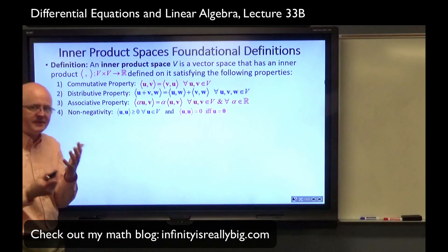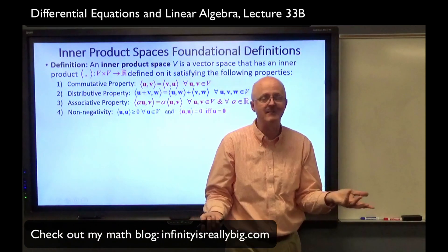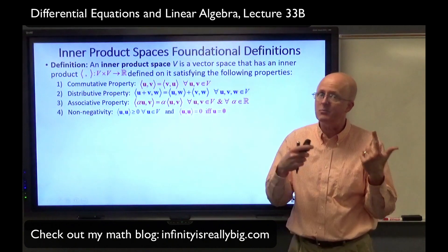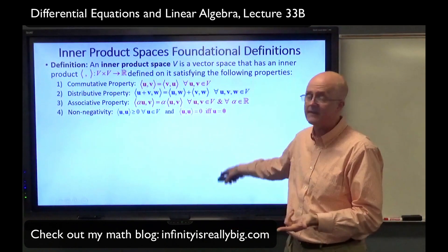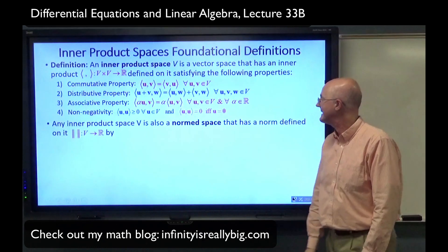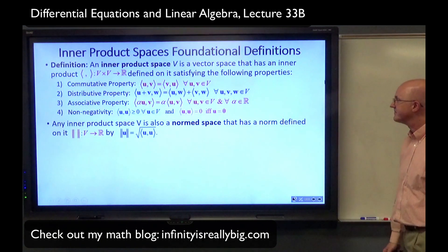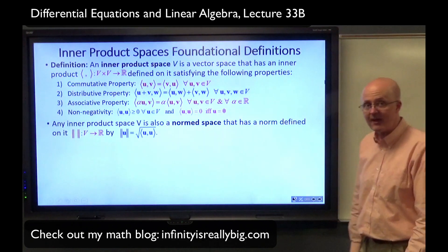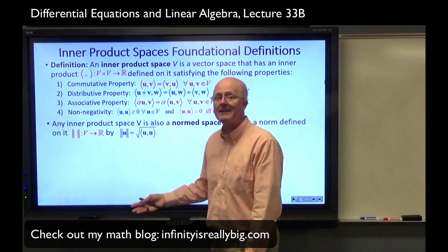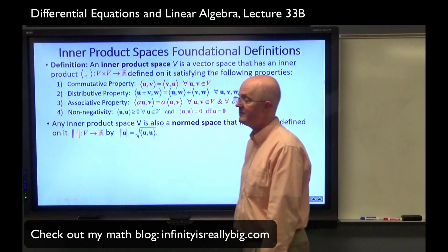This is a definition — when we do the theory about inner product spaces, we assume these axioms are true. If you want to apply the theory to particular examples, you need to verify these for the example. Any time you have an inner product space, you can define the size of a vector — its magnitude or norm — by taking the square root of the inner product of the vector with itself. We can also define a metric, a distance function, by taking the distance between two vectors U and V to be the norm of their difference.